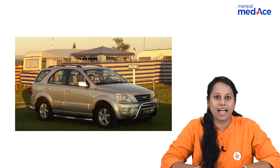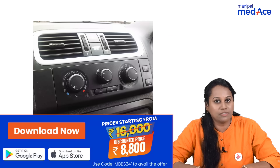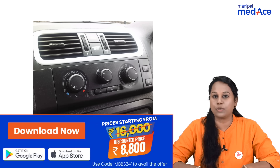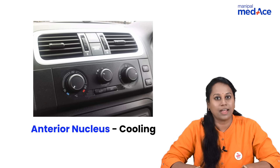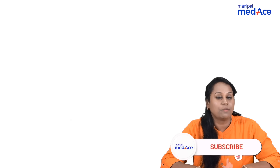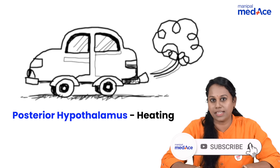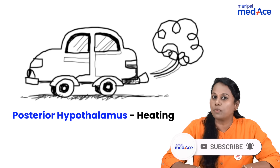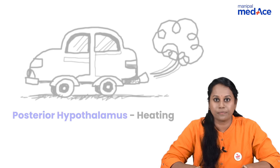In a car, anteriorly there is AC which produces cooling. So, anterior hypothalamus has a cooling effect on the body. In a car, posteriorly there is the silencer which produces heat. So, posterior hypothalamus has a heating effect on the body.